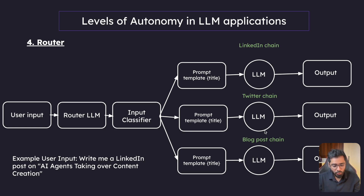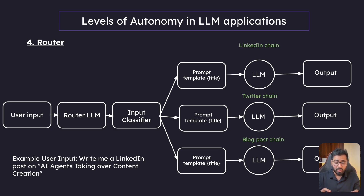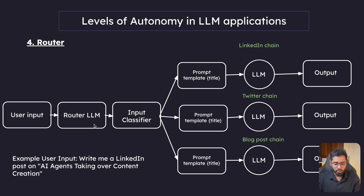Let's take it step by step. The example user input is: 'Write me a LinkedIn post on AI agents taking over content creation.' The user is being very specific about LinkedIn. There is an LLM node where the prompt instructs it to look at the user input and figure out which social media channel the user is asking about. This router LLM returns a keyword — LinkedIn, Twitter, Threads, or whatever — and that keyword is returned to a simple input classifier, which could just be a Python function.